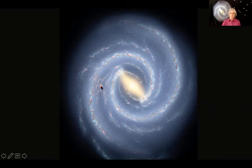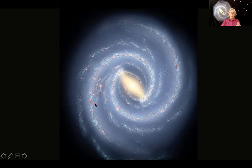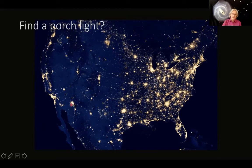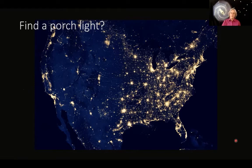You'll also notice that we're about a third of the way out from between the center and the outer limits. But the solar system is really so small that it would be a little like trying to find your neighbor's porch light on an image of the United States at night — like trying to find a porch light in Las Vegas. It's not possible to see something that tiny on that model. So, how do we make it understandable?